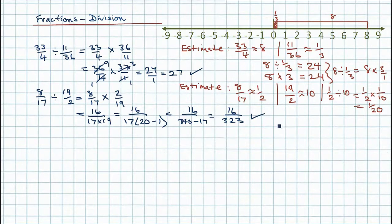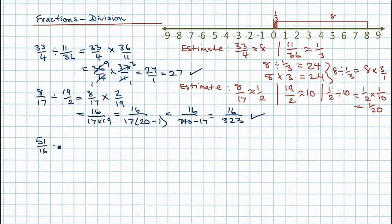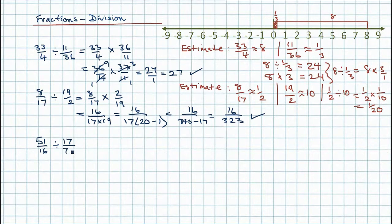Let's do one more. This time I'm going to use some larger numbers — it shouldn't give us any greater difficulty. 51 sixteenths — so an improper fraction to start with — divided by 17 over 72. Fairly large numbers now.